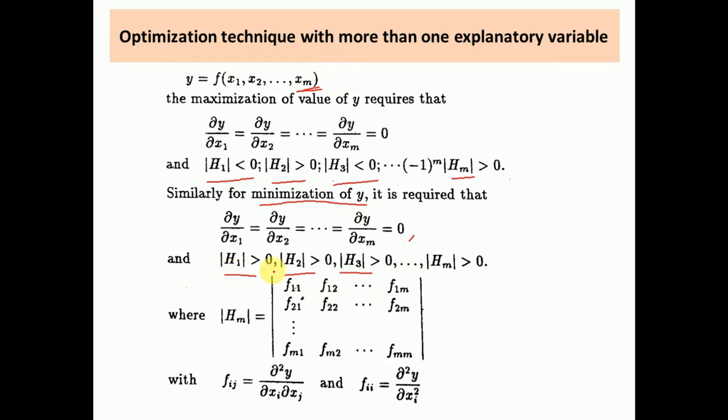A Hessian determinant is a determinant whose elements are obtained by taking second order partial derivatives of the objective function with respect to the explanatory variables of the given function. I will show you the process of finding the Hessian determinant with the help of an example later on.